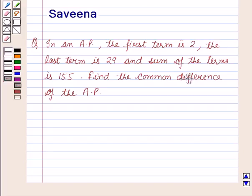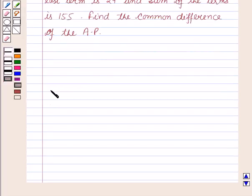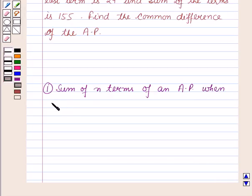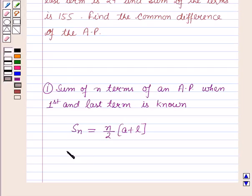Now before starting the solution of this question, we should know some results. The sum of n terms of an AP when first term and last term is known is given by Sn = n/2 times (A + L), where A is the first term,